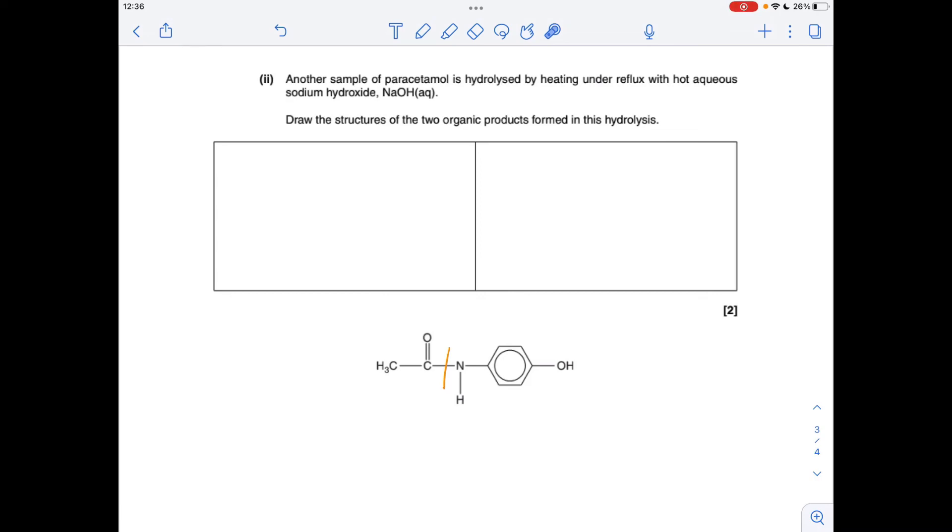And finally, the reaction of paracetamol with hot aqueous sodium hydroxide. So we've got hydrolysis of the amide bond. So this bond is going to break. So this part here is going to turn into that. And the right-hand side of the broken bond, we're going to get an amino group formed here. But just like we've explained in the previous part of the question, this sort of phenol group, if you like, is turned into the salt.